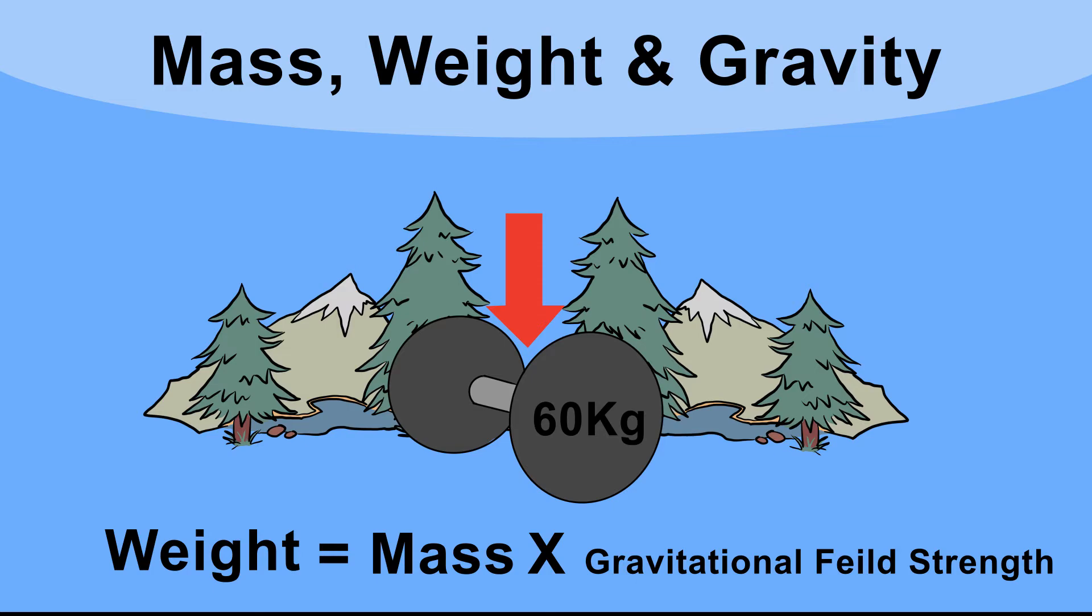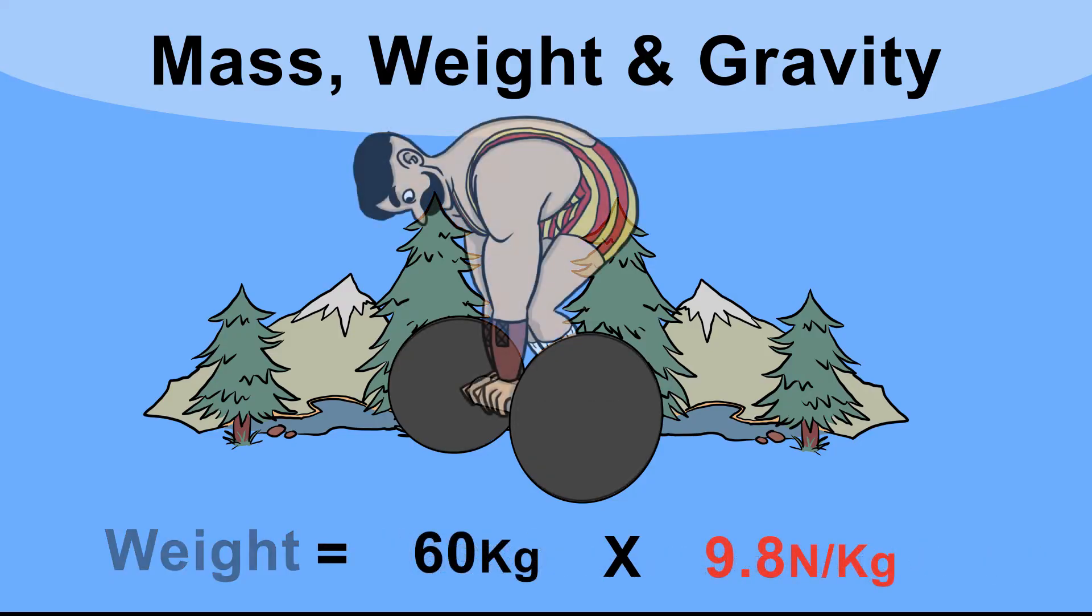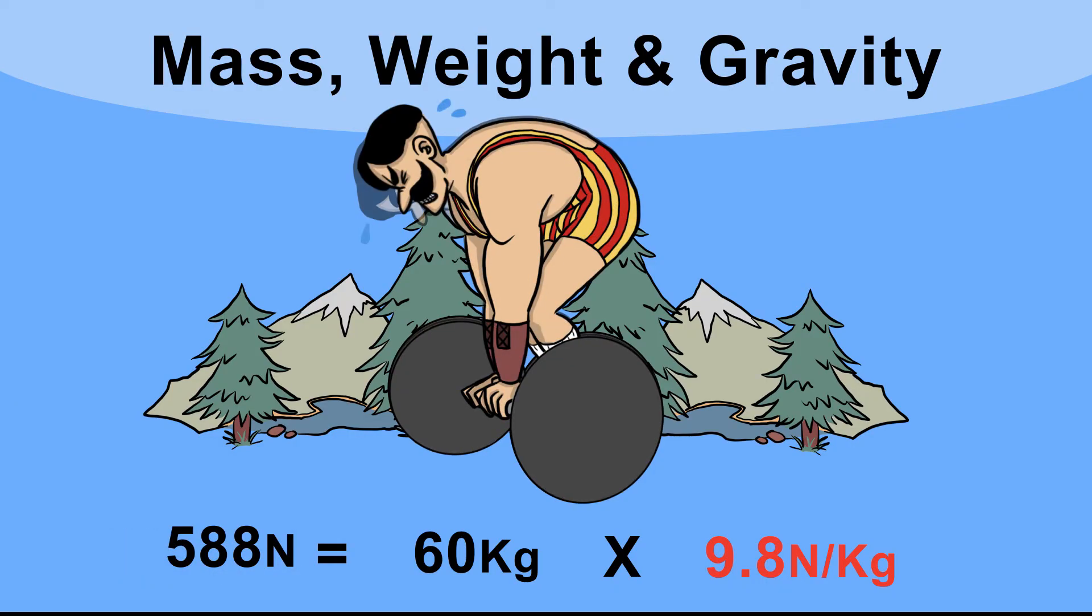On Earth, the gravitational field strength is about 9.8 newtons per kilogram. So the weight of the dumbbell on Earth is 60 times 9.8, which is 588 newtons—much too heavy to pick up.